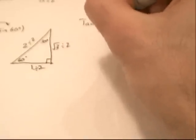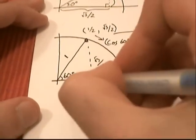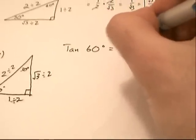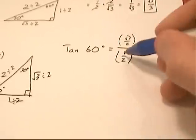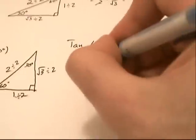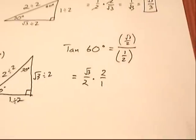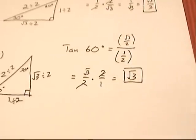And we'll do tangent over here. Tangent of 60 degrees is going to equal the opposite over the adjacent, and for 60 degrees that's √3/2 over 1/2. We take the fraction in the denominator, invert it and multiply it by the fraction in the numerator. That is equal to √3/2 times 2/1, because the inverse of 1/2 is 2. The 2's cancel and we get exactly √3, which is what we obtained before.